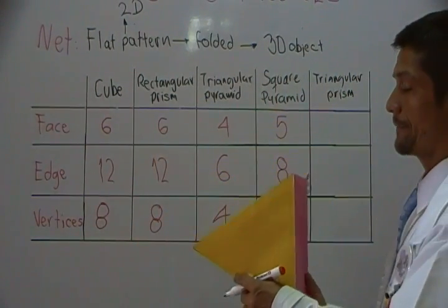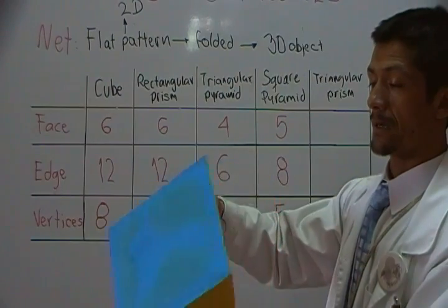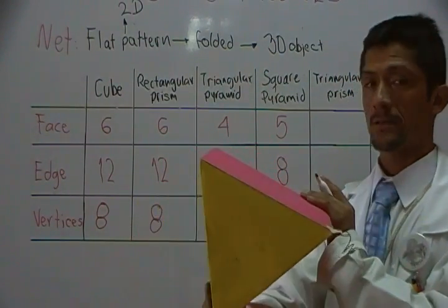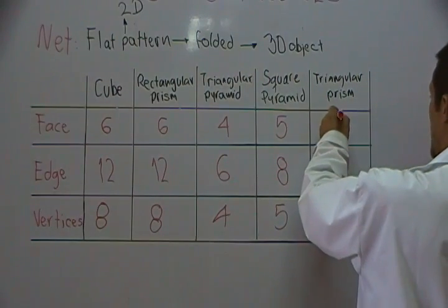So in order to finish with this, we have three faces that are squares in this specific example, plus two faces that are triangles. So five faces.